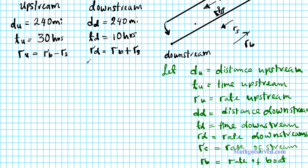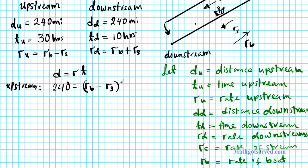Now I'm going to set up two equations. The equation we're going to use to connect rate, time, and distance is known as the DIRT formula: Distance equals Rate times Time. For the upstream equation: the distance upstream is 240, equals the rate upstream — which is the rate of the boat minus the rate of the stream — times 30. For the downstream equation: the distance downstream is also 240, equals the rate of the boat plus the rate of the stream, times 10.